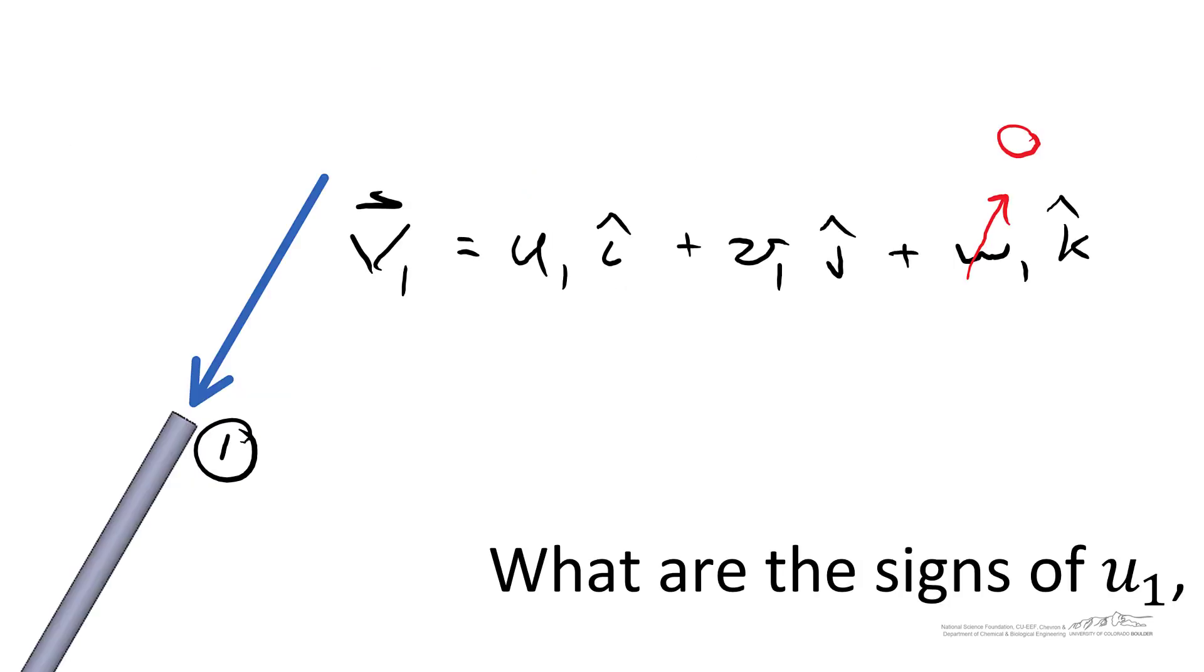Let's start by decomposing v1 into its horizontal and vertical components. The horizontal component acts to the left and the vertical component acts downward. This horizontal component is u1 i hat and the vertical component is v1 j hat.